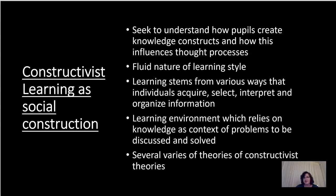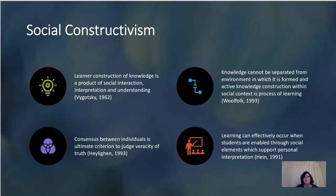There are several theories on social constructivism. The common theme that they all share is that the learner interacts with the environment as well as that social group of peers. The learner's construction of knowledge can be described as a product of that social interaction, interpretation, and understanding. It's also a consensus between individuals, and truth is founded whenever individuals agree on a topic.